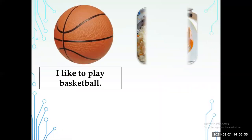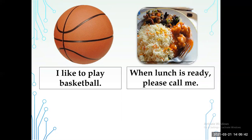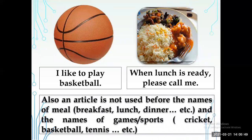Rule 5: Look at the screen — 'I like to play basketball' and 'When is lunch?' No article is used because article is not used before the names of any meal like breakfast, lunch, or dinner, and before the names of any games and sports like cricket, basketball, tennis, etc.